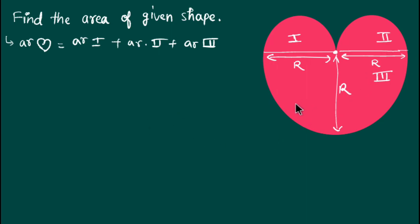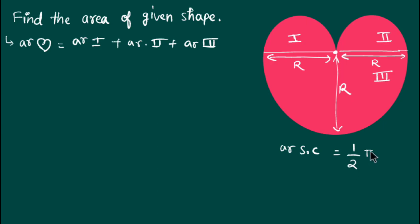Now, the area of a semicircle is half of the area of a circle, so it is half of π r², where r is the radius of the semicircle.